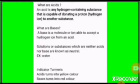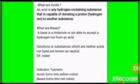What are acids? An acid is any hydrogen-containing substance that is capable of donating a proton or hydrogen ion to another substance. What are bases? A base is a molecule or ion able to accept a hydrogen ion from an acid. Solutions or substances which are neither acids nor bases are known as neutrals — for example, water. As an indicator, turmeric turns yellow in acids and red in bases.